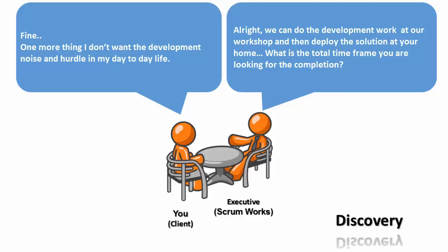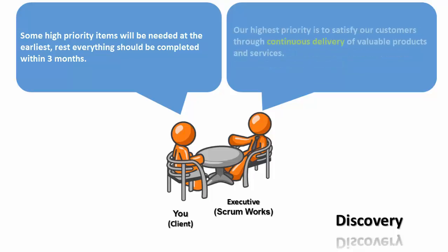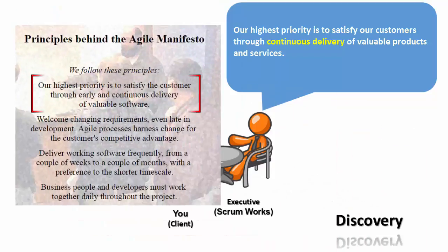What is the total timeframe you are looking for the completion? Some high priority items will be needed at the earliest. Rest everything should be completed within 3 months. Our highest priority is to satisfy our customers through continuous delivery of valuable products and services. Great! That means I need not wait for the entire work to be completed before I start using them.